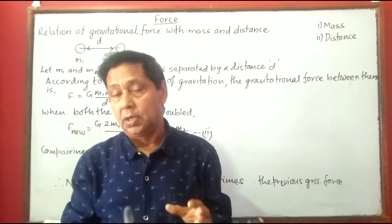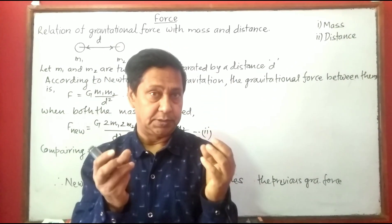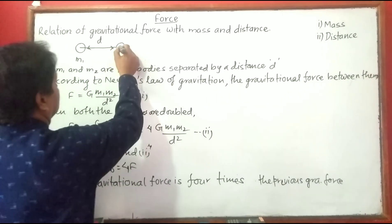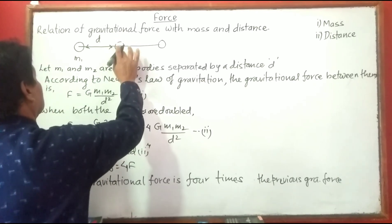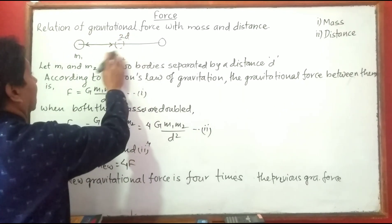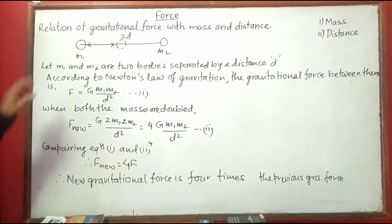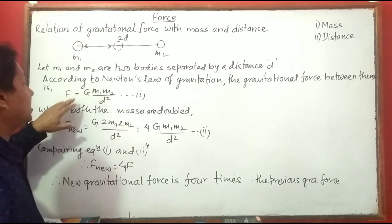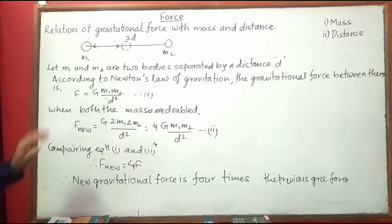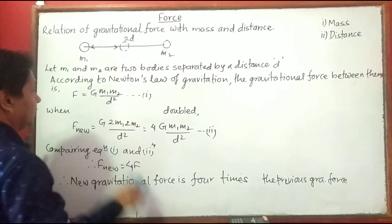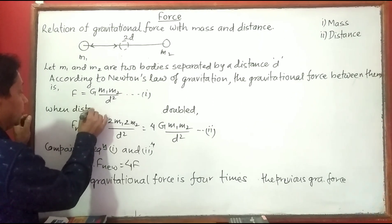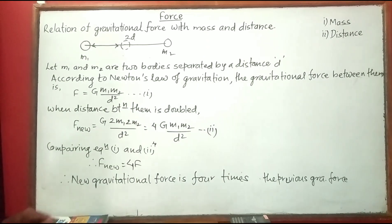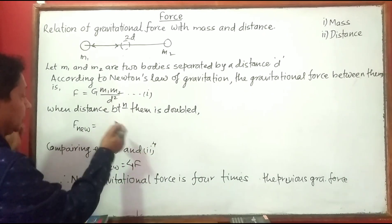Now let's talk about distance instead of mass. What will be the effect on gravitational force between two bodies when the distance between them is doubled? When distance is doubled, the object is taken to distance 2d. Let m1 and m2 are the two bodies separated by a distance d. According to Newton's law of gravitation, the gravitational force between them is F = G·m1·m2 / d².